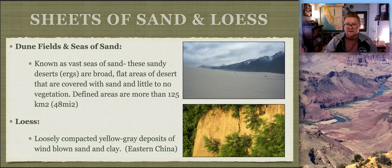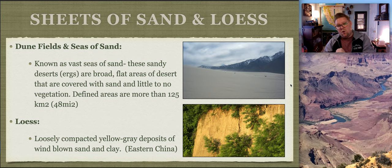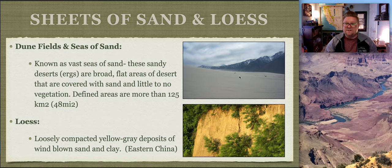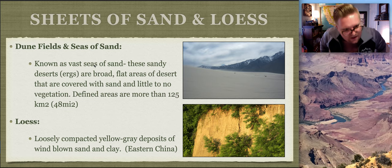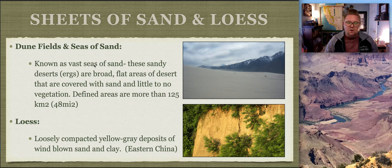Dune fields and seas of sand: this photo shows what looks like a cloud but is actually sand migrating, blowing from left to right - saltating and becoming airborne as suspension. Sandy deserts, otherwise known as ergs, are broad flat areas of desert covered with sand and little to no vegetation, defined as more than 125 square kilometers or 42 square miles to be considered a sea of sand.